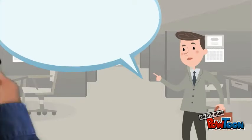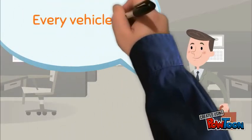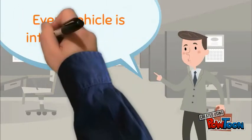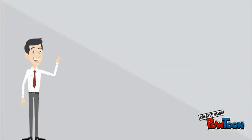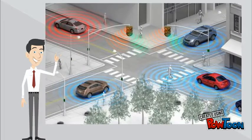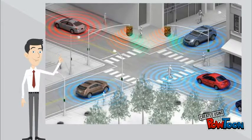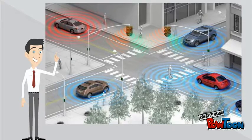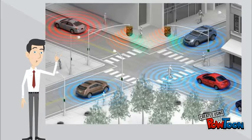Every vehicle is integrated with a device in it. Future vehicles with this device can communicate with other vehicles nearby. As you can see here, there are four cars, each of which is communicating with every other car. This helps them take their next step safely without any crash.